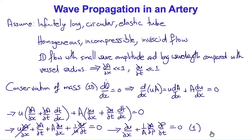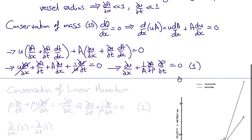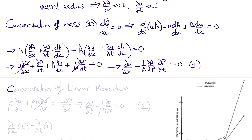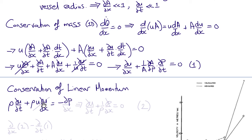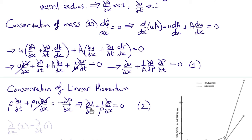Next, conservation of linear momentum has the transient inertial term rho (del u / del t) plus the convective inertial term rho u (del u / del x) equals the pressure gradient minus del p / del x. Our linearizing assumption lets us ignore the small convective term, leaving del u / del t plus (1/rho)(del p / del x) equals 0. This is equation 2.